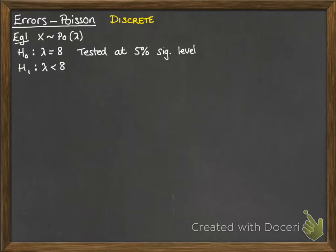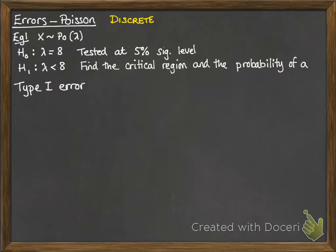We have this first example where x follows a Poisson distribution with a mean of lambda, and our null hypothesis is that lambda is 8. And the alternative hypothesis is that our mean is less than 8. This is going to be tested at a 5% significance level. We're going to find the critical region and the probability of getting a type 1 error.